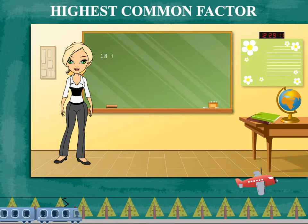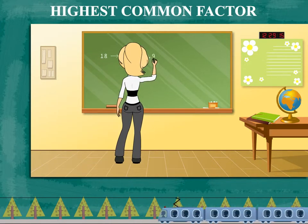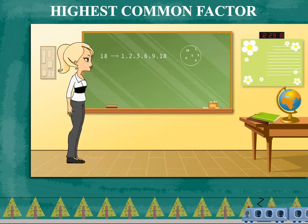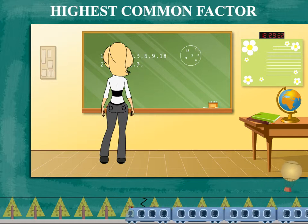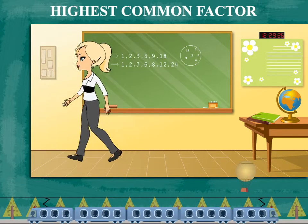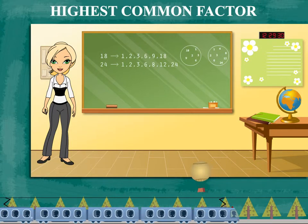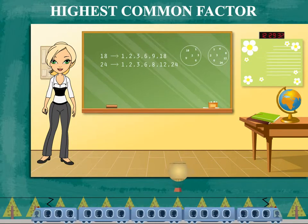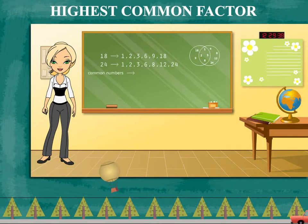Teacher Rosy has a set of factors on the board: 1, 2, 3, 6, 8, 12, 24. The common factors are 1, 2, 3, and 6.